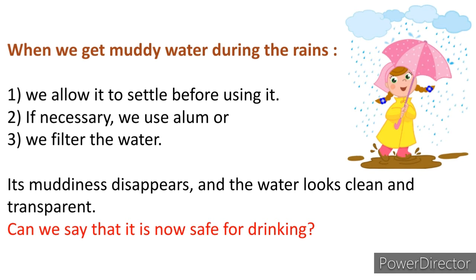When we get muddy water during the rainy season, we do the experiments we have seen: we allow it to settle before using it, using the settling method. If necessary, we use alum also. You must have seen your mothers sprinkling alum in a circular motion in the water, and after some time the soil particles all settle down at the bottom.